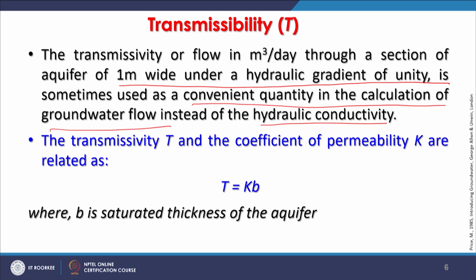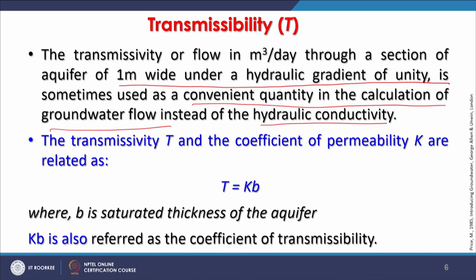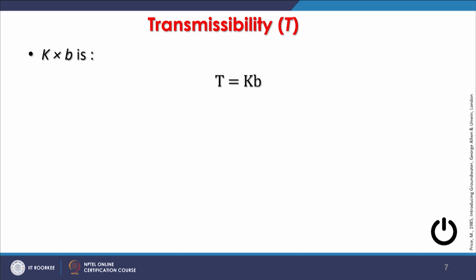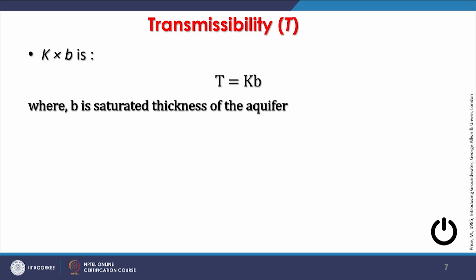B is the saturated thickness of the aquifer. In confined aquifer conditions B is constant, whereas in unconfined aquifer conditions B varies. K multiplied by B, also called the coefficient of transmissibility, gives T = KB where B is the saturated thickness. Applying this in Darcy's Law: Q = T × W × HL / L, where W is the breadth of the aquifer. This shows how transmissibility and the hydraulic gradient HL/L together determine discharge.